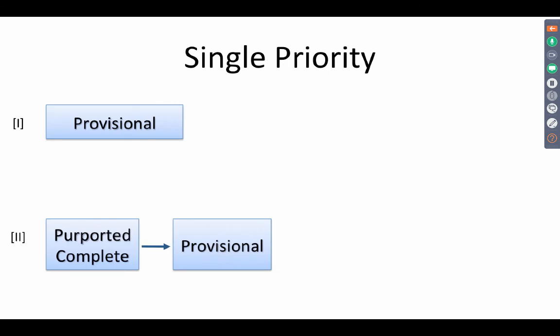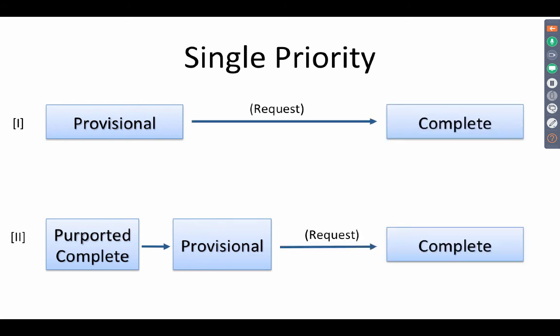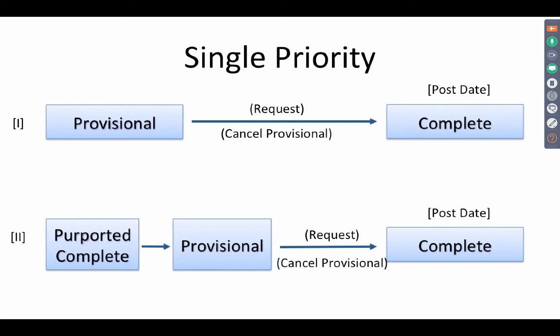Single priority: in two cases — say you file a provisional directly, or you file a purported complete and convert it into a provisional — in both these cases, if you make a request when you file the complete, you can ask for the provisional to be cancelled after you file the complete. In both these cases, the application gets postdated. There is a postdating that happens based on a single priority, where a provisional is filed and followed up with a complete; upon request, the provisional is cancelled, and upon the cancellation of the provisional, the complete is postdated.